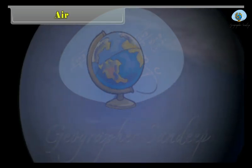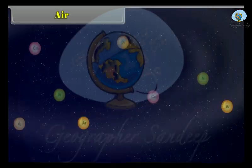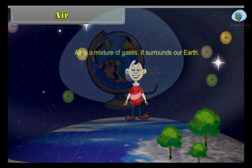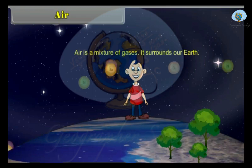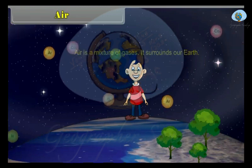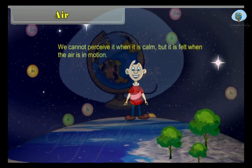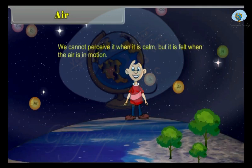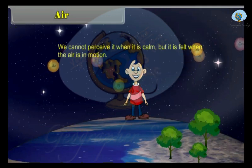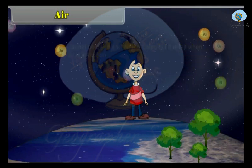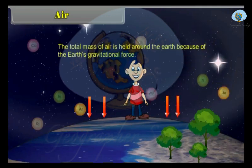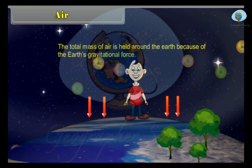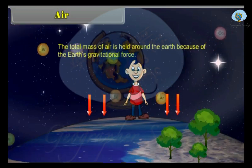Air is a mixture of gases. It surrounds our earth. We cannot perceive it when it is calm, but it is felt when the air is in motion. The total mass of air is held around the earth because of the earth's gravitational force.